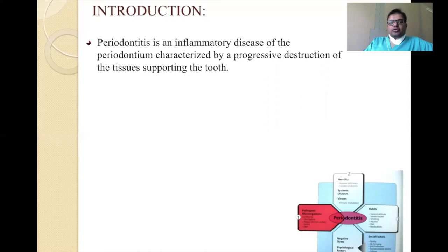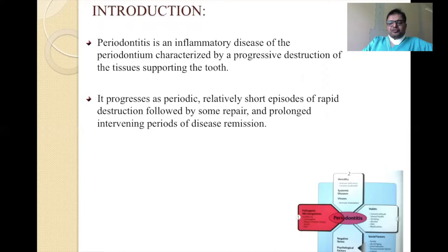Periodontitis is defined as an inflammatory disease of the periodontium, characterized by progressive destruction of the tissue supporting the tooth. The tissue destruction is continuous — it does not happen as a one-off event and it can recur. It is progressive but not continuous — progressive means it's happening over a period of time, whereas continuous would mean it's happening literally every minute.